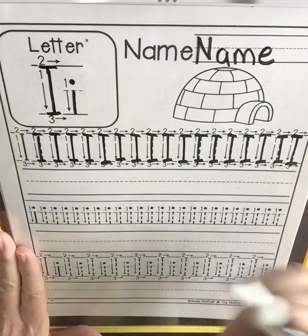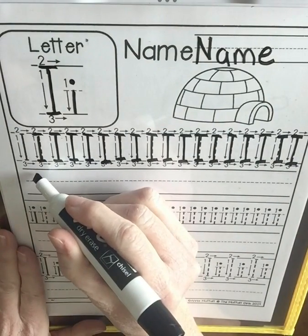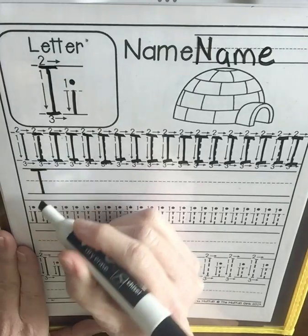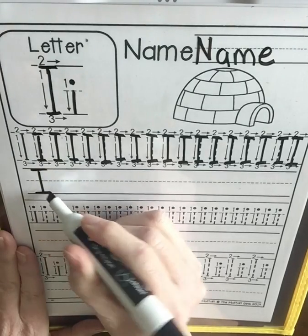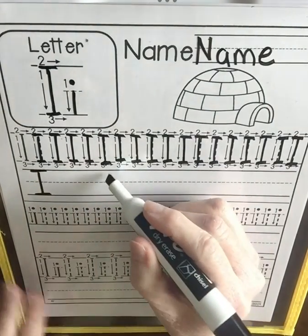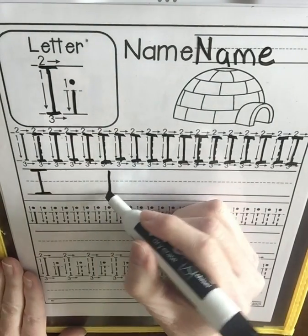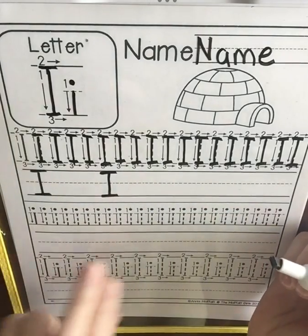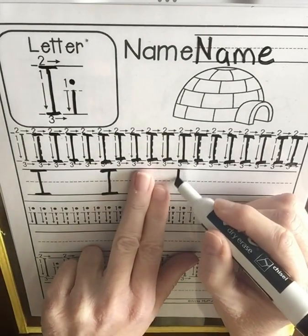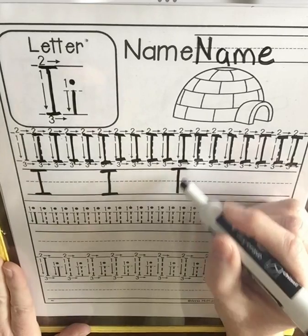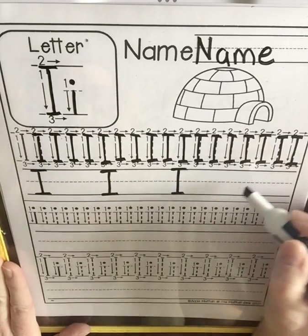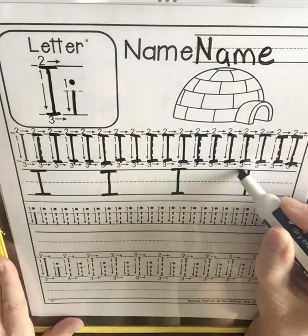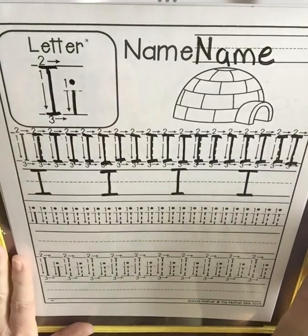We're only going to do four. Start over at the very left — big line down, back to the top, little line, little line. Two finger space, big line down, back to the top, little line, little line. Another two finger space, big line down, back to the top, little line, little line. And one more — big line down, back to the top, little line, little line.